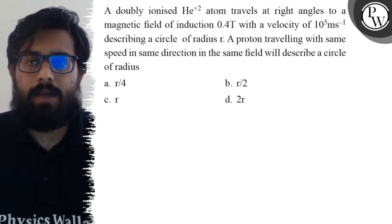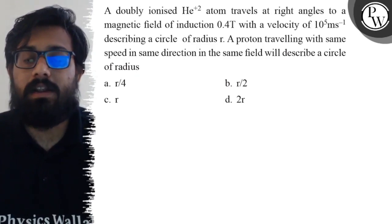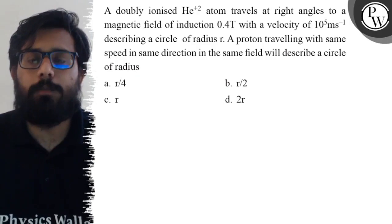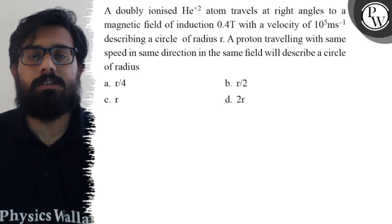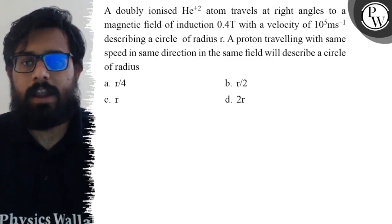A proton traveling with the same speed in the same direction in the same field will describe a circle of radius: The first option is r/4, second option is r/2, third option is r, and fourth option is 2r.